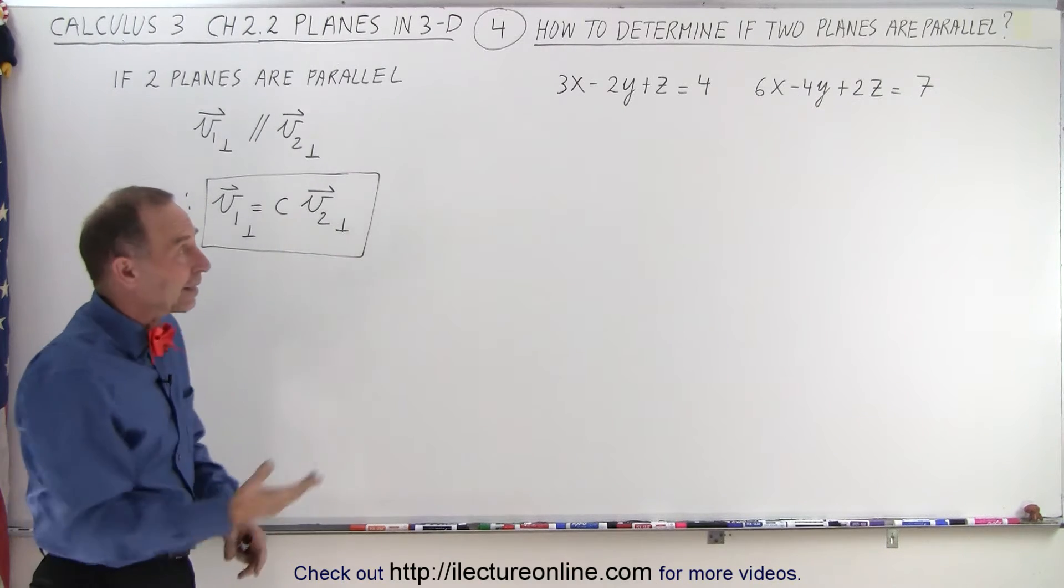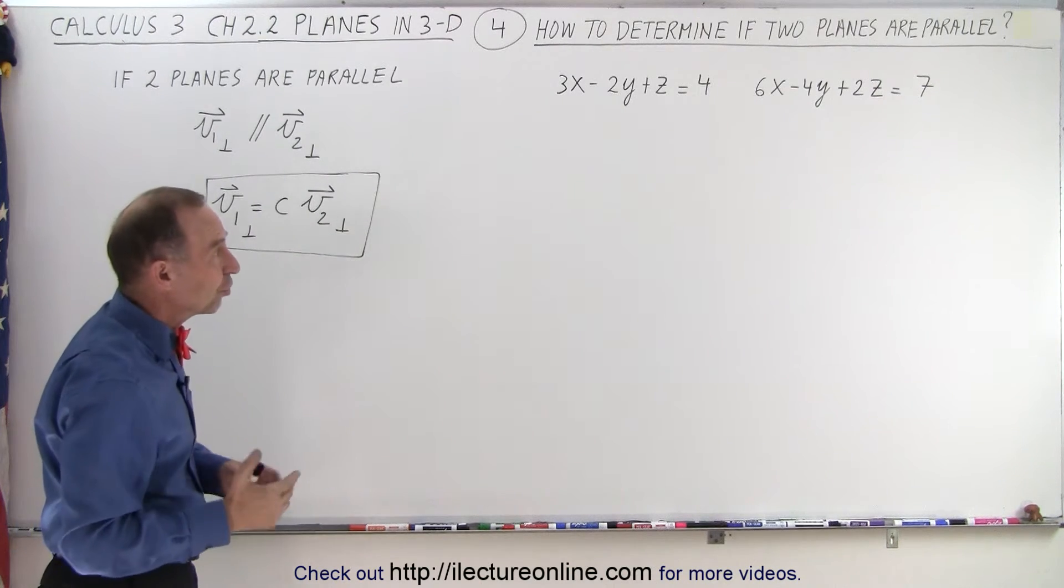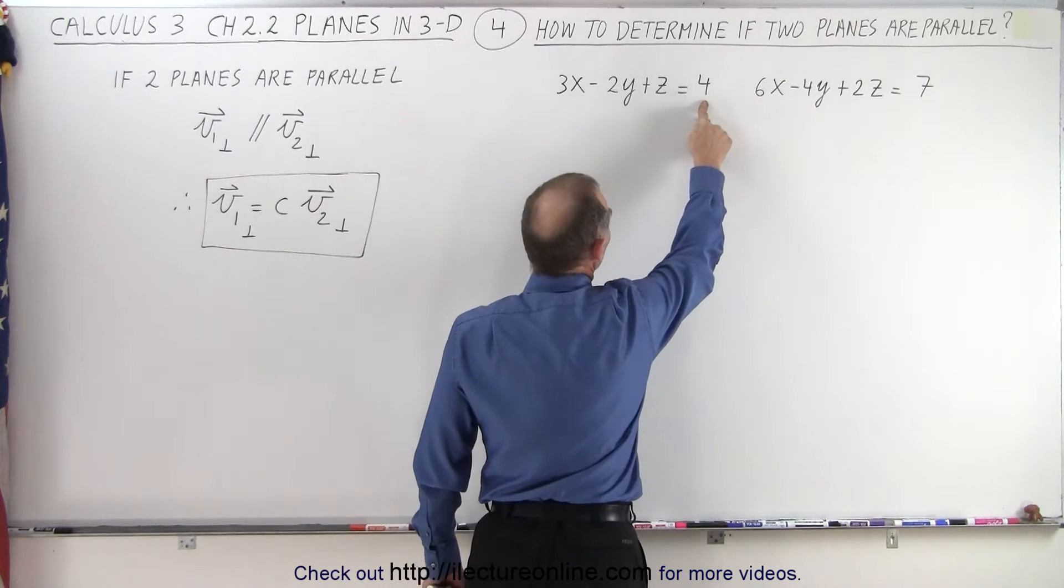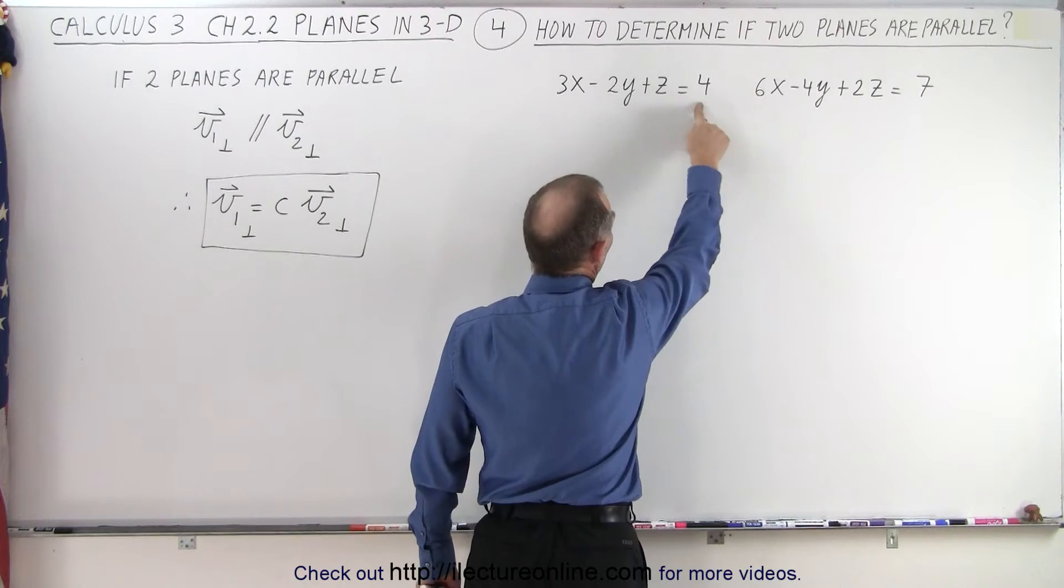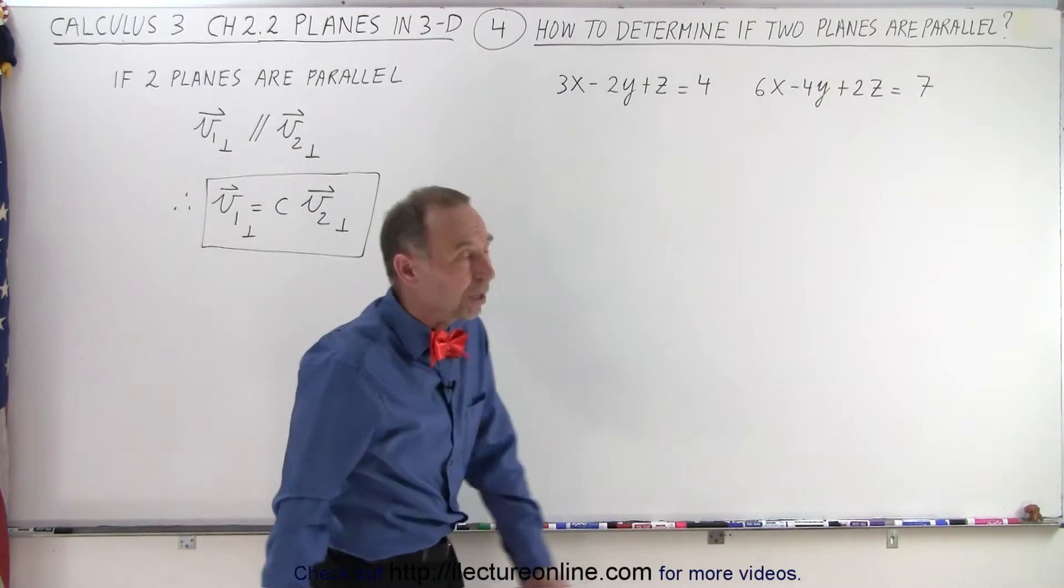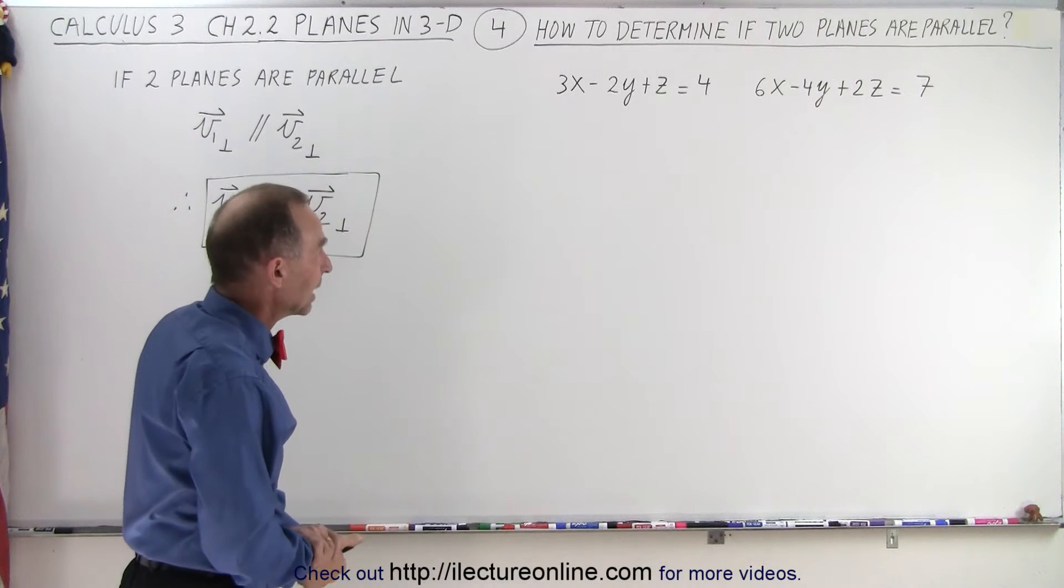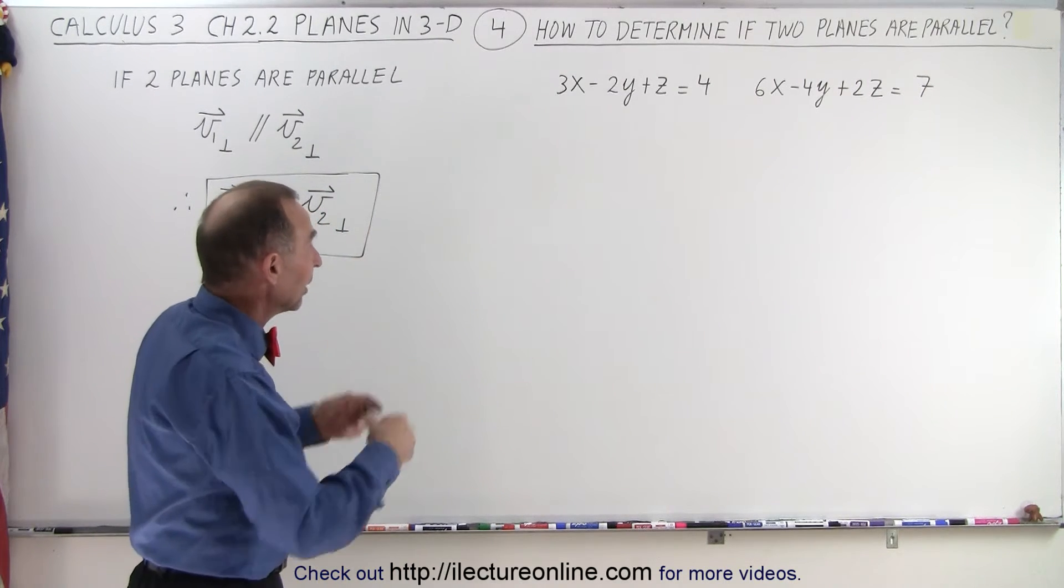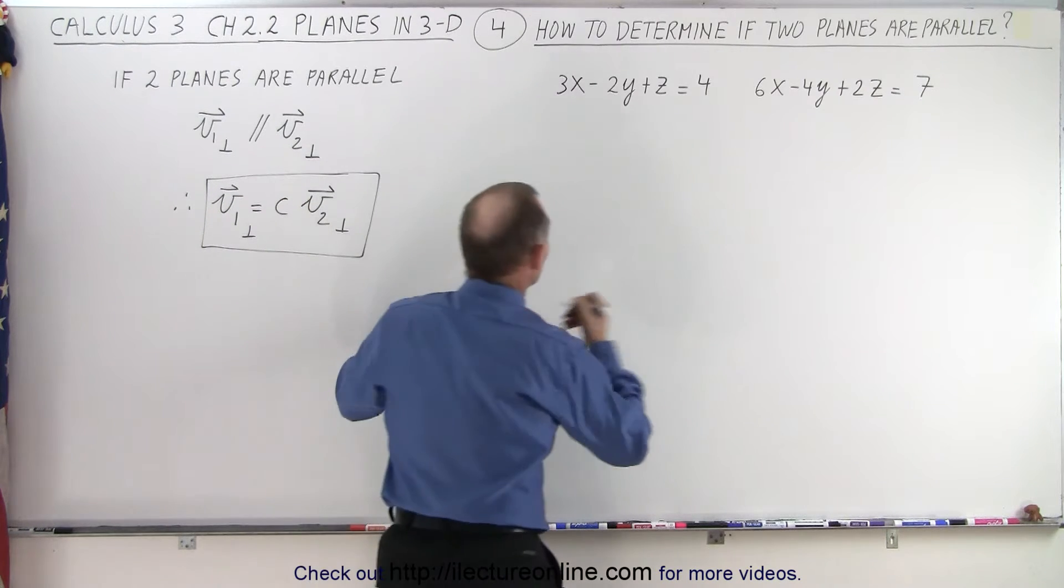So let's try that on these two equations. Notice they're not exactly in the general form. To be in the general form, we would have to move the 4 to the left and write minus 4 equals 0, and here minus 7 equals 0. But they're still equations of two planes. So from that, we're going to calculate or get the perpendicular vectors of both planes.